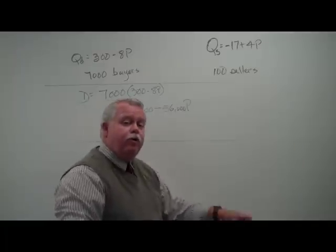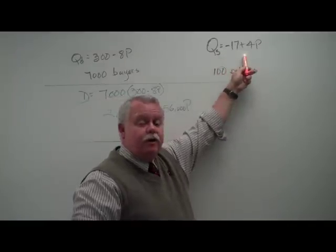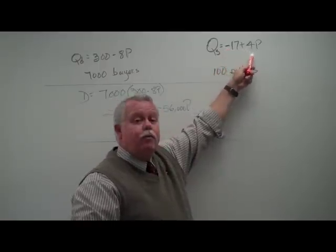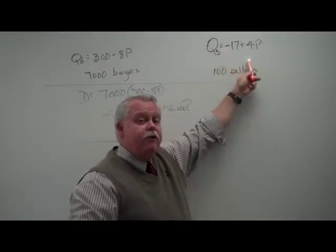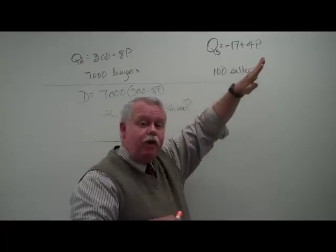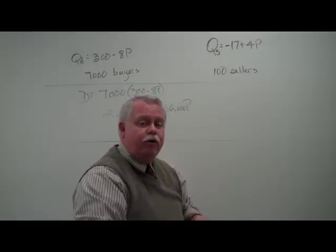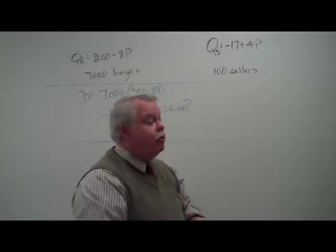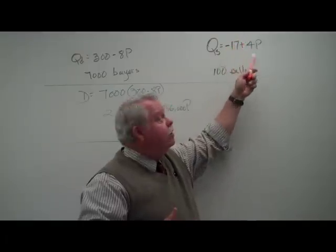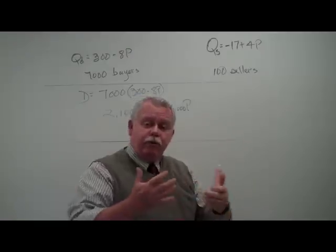We do the same thing over here with the supply curve. We estimate the supply function for an individual firm to be minus 17 plus 4P. Again, this is a straight line function with slope plus 4P, indicating the line moves up. As price rises, the quantity supplied or produced and offered for sale also increases. Every time the price goes up by $1, the supplier produces four more units.